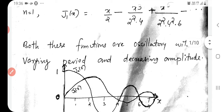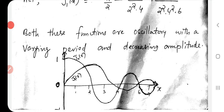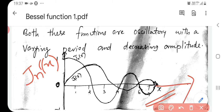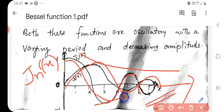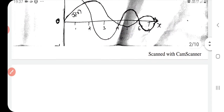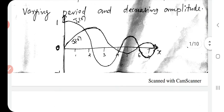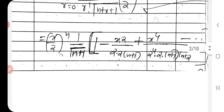These J0 and J1, if you try to plot them against x — Jn of x is taken along the y-axis, x is taken along the x-axis — J0 of x varies like this, and J1 of x is like this. It has a varying period and the amplitude steadily decreases. We can see the decreasing amplitude. That is how J0 of x and J1 of x behave when plotted.